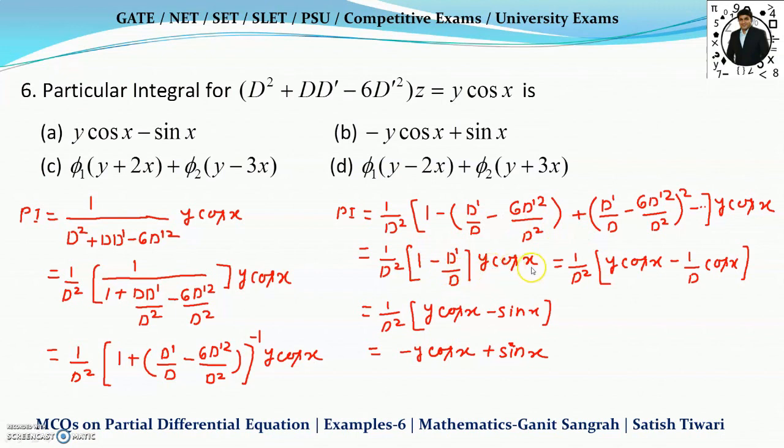Now, 1 into y cos x we get right here. Now, operate D dash by D over this function. D dash means derivative with respect to y. I just take the differentiation, y is having the derivative 1, so we are left with cos x. 1 by D is integration.